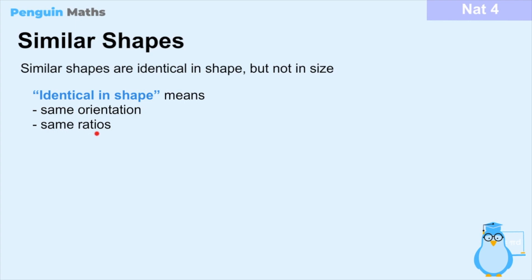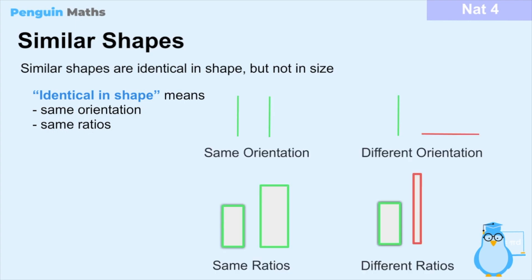When we talk about being identical in shape, this means that the shapes have the same orientation and the same ratios. Same orientation means they both face in the same direction. Looking at two lines that are parallel, they have the same angle relative to each other. But if the lines face in totally different directions, they do not have the same orientation.